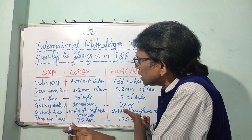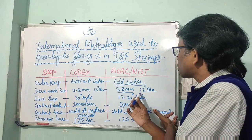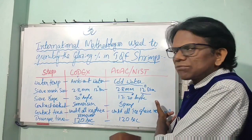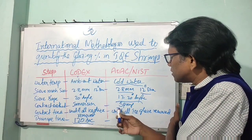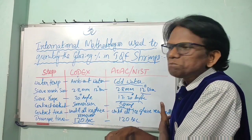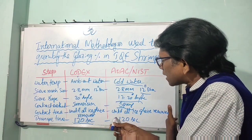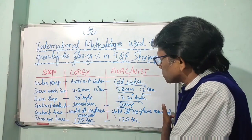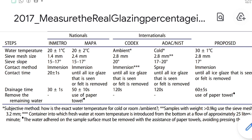The AOAC or NIST method requires cold running water. It uses a 2.8 mm mesh sieve with a 12-inch diameter. After melting the ice, the drainer is kept at a 17 to 20 degree angle. The contact method is spraying — you spray the IQF frozen shrimps with chilled water. The contact time is until all ice glaze is removed, and the drainage time is 120 seconds.